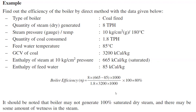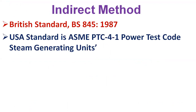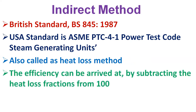It should be noted that a boiler may not generate 100% saturated dry steam and there may be some wetness in the steam — that is an important point for consideration. For the indirect method, reference standards for boiler testing at site include the British Standard BS 845 (1987) and the USA standard ASME PTC 4.1 — Power Test Code Steam Generating Units. The indirect method is also called the heat loss method, where efficiency is arrived at by subtracting the heat loss fractions from 100. The standards do not include blowdown loss in the efficiency determination process. Practicing energy managers in industry prefer simpler calculation procedures.